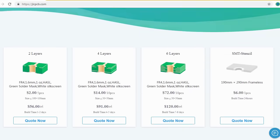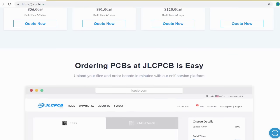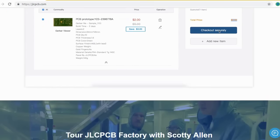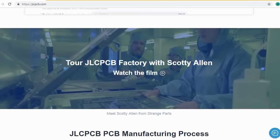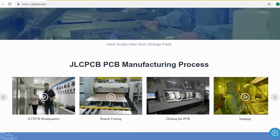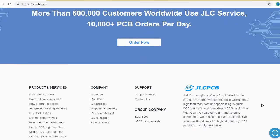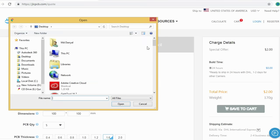JLCPCB is the largest PCB prototype enterprise in China and a high-tech manufacturer specializing in quick PCB prototype and small-batch PCB production. Ordering PCBs with JLCPCB is very easy and simple. You just create your Gerber file and upload to JLCPCB.